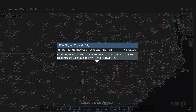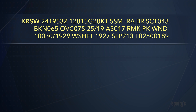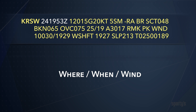Next, we'll cover how to read each element of a METAR, and then go over where to find them online and in mobile apps. METARs are presented in a set coded sequence. It is easy to start by remembering where, when, and wind. These are always the first three pieces of information in a METAR.